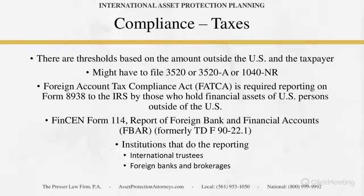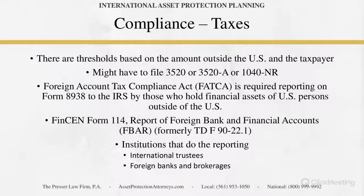If you have an international entity, you're generally going to have a corresponding bank account, which you may set up in a different jurisdiction altogether — for instance, you may have a trust set up in Belize, a co-trustee in Switzerland, and the bank account in Switzerland or Liechtenstein. That way, if a creditor is coming at you, they have to go through so many jurisdictions to actually get at anything, and the trustee could always move the money. It's pretty complicated for a creditor to get at it — unless they're the U.S. government, in which case they have a better shot, depending on the circumstances.